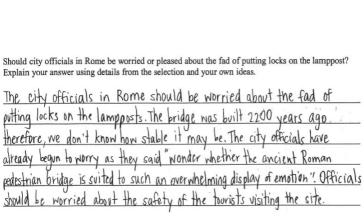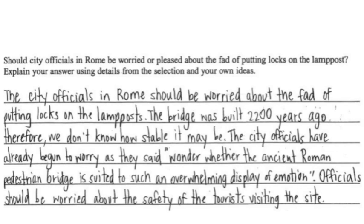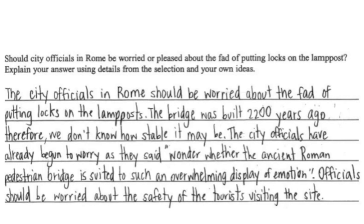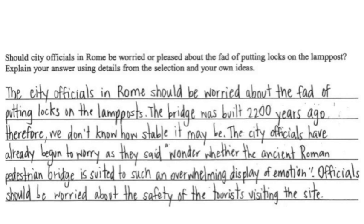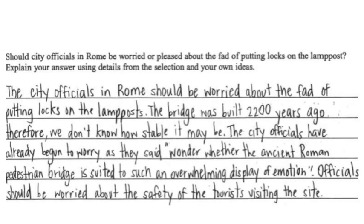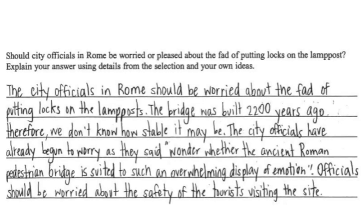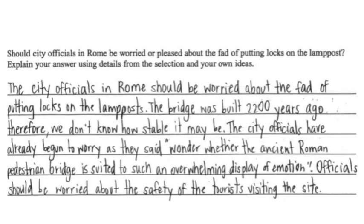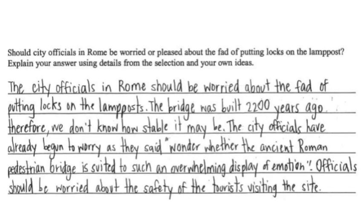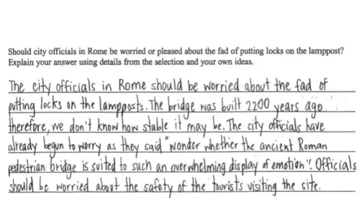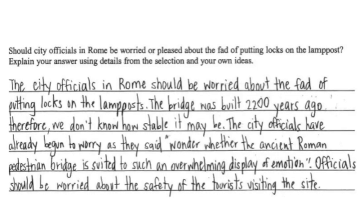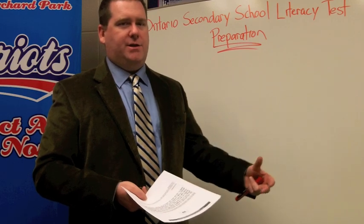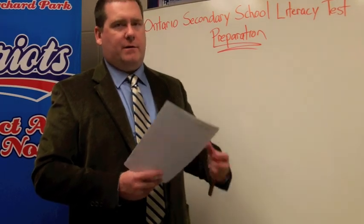The third example is the best one. It says 'the city officials in Rome should be worried about the fad of putting locks on the lampposts. The bridge was built 2,200 years ago, therefore we don't know how stable it may be. The city officials have already begun to worry as they wonder whether the ancient Roman pedestrian bridge is suited to such an overwhelming display of emotion. Officials should be worried about the safety of the tourists visiting the site.' It isn't perfect, but it demonstrates a well-developed response — the student quotes directly from the text rather than just paraphrasing, thinks beyond a simple answer, and develops ideas using a point-proof-explanation structure. This is the sort of answer that would likely get you full marks on the literacy test.